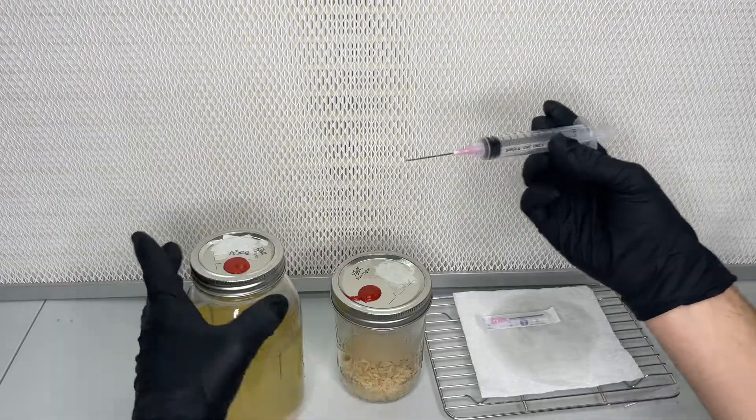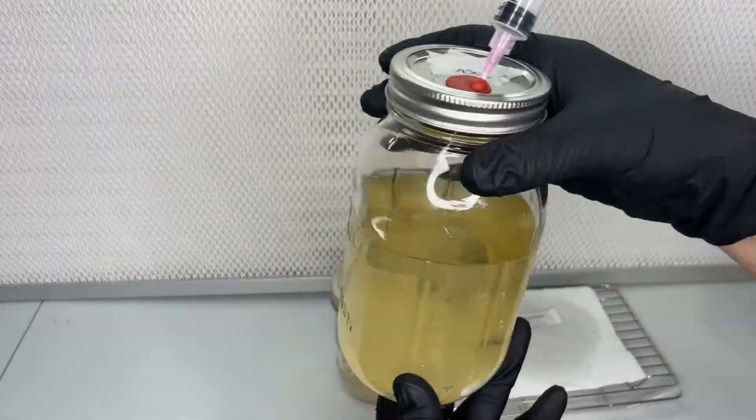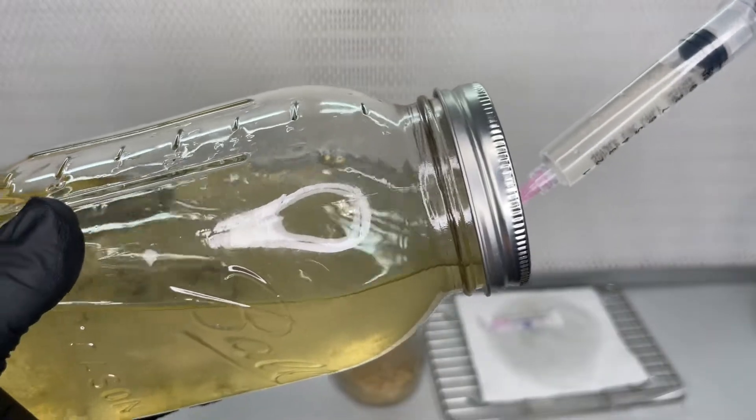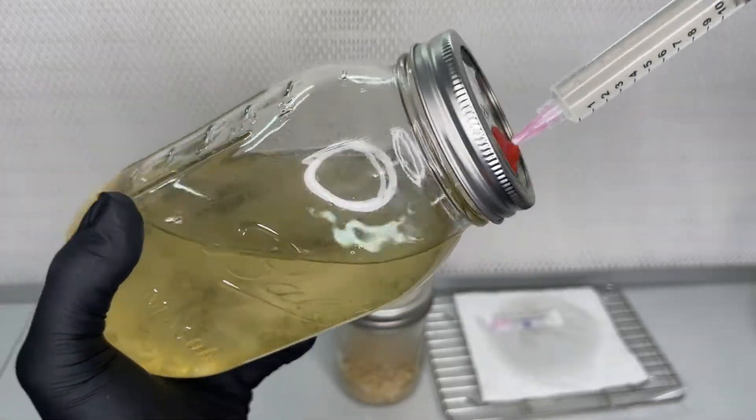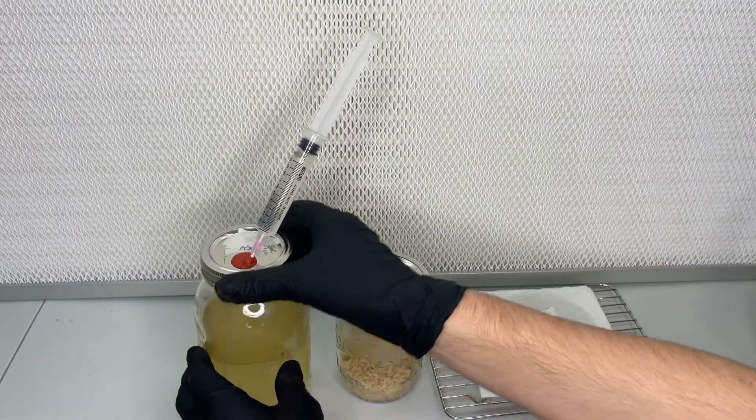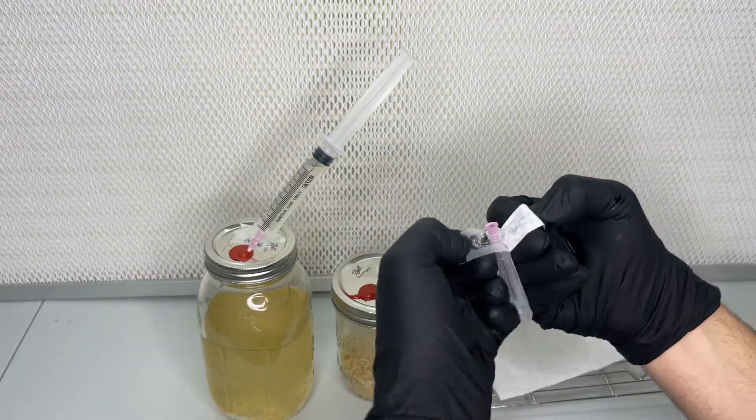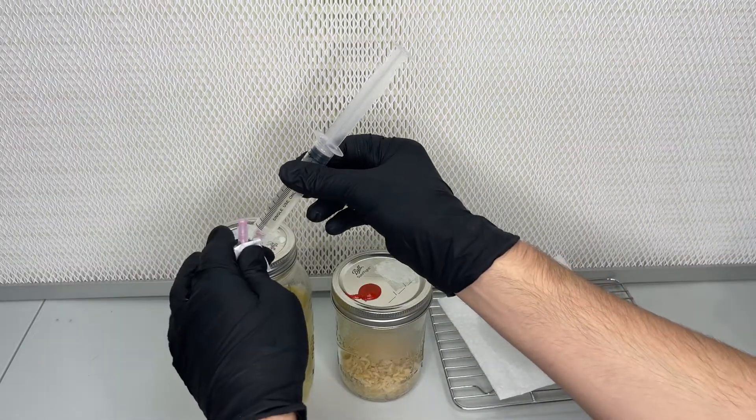I use 12 milliliters of the liquid culture and inject it into the rice jar, making sure to cover the entire surface evenly. After inoculating the rice jar, I allow it to colonize in the dark for three days at 70 degrees Fahrenheit.